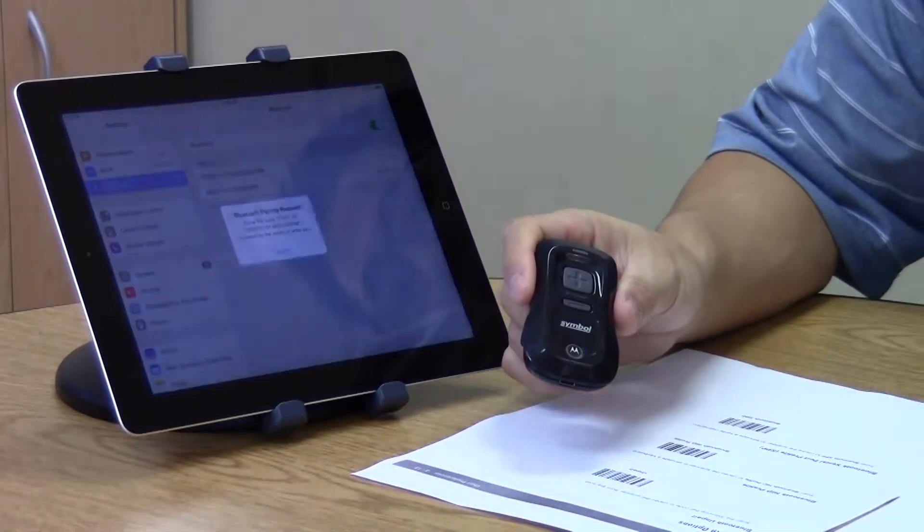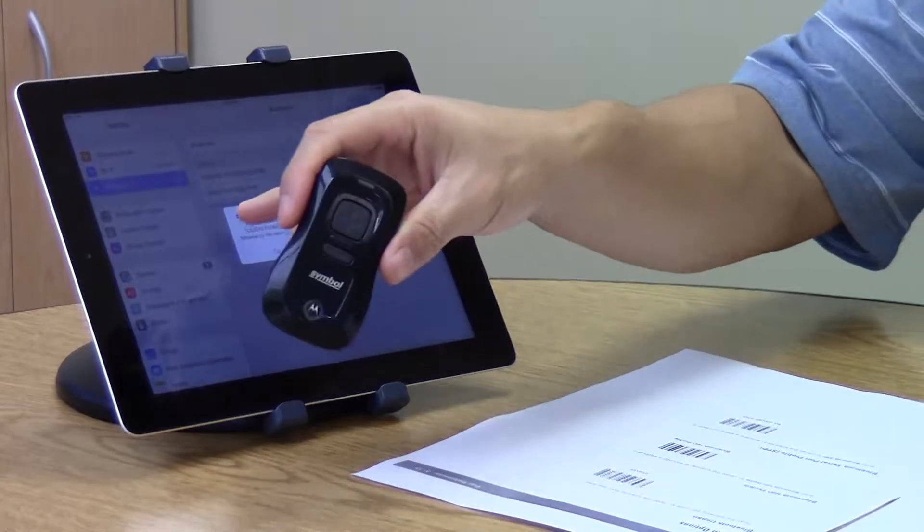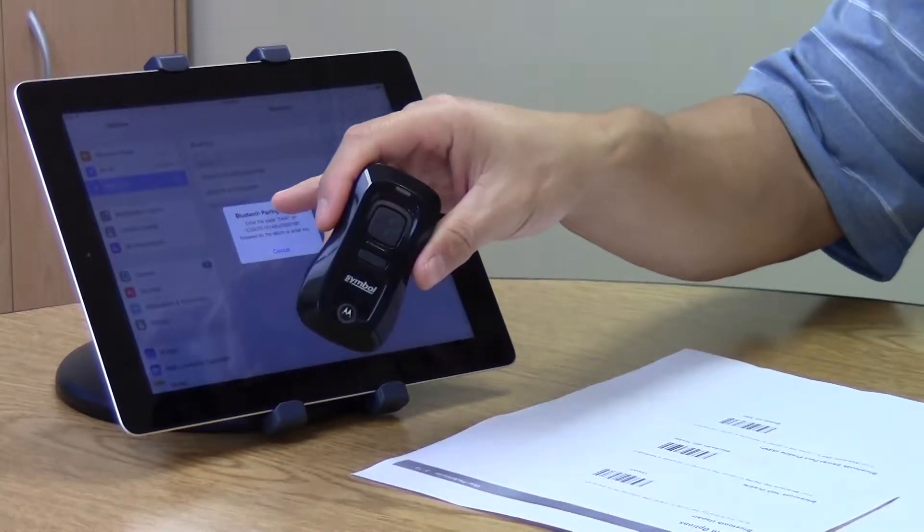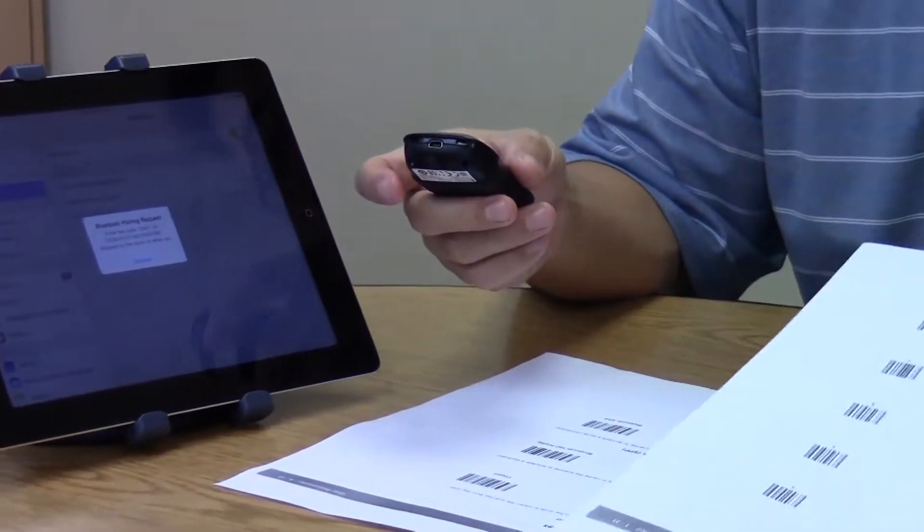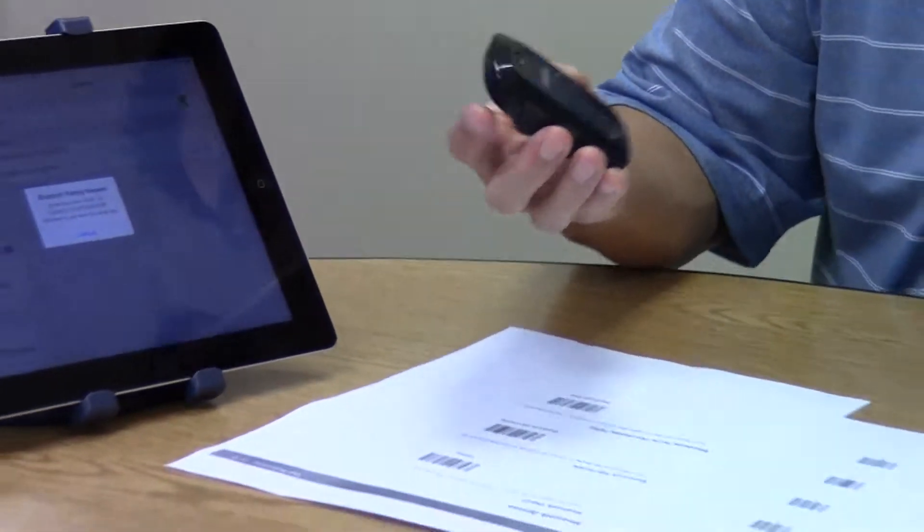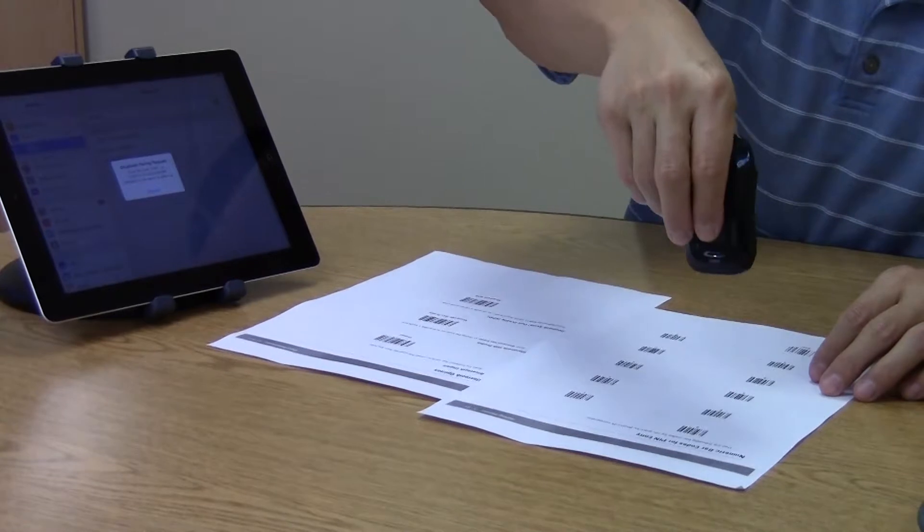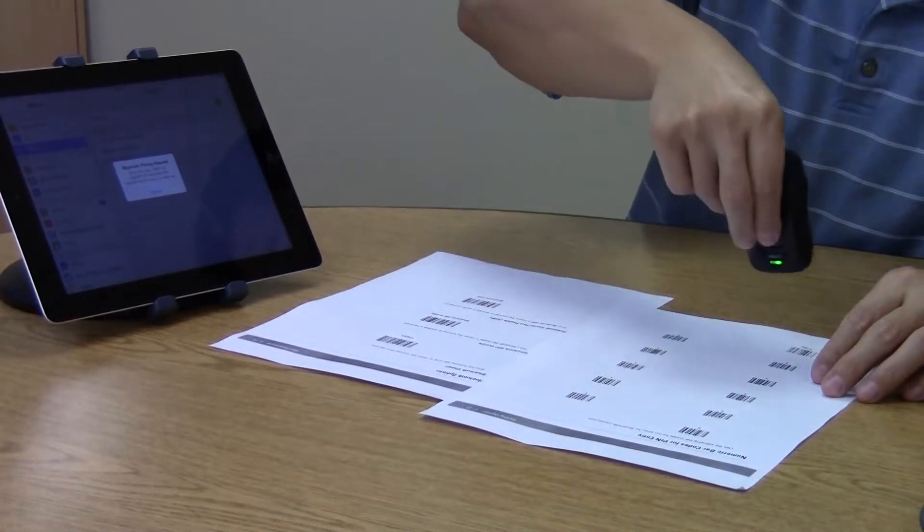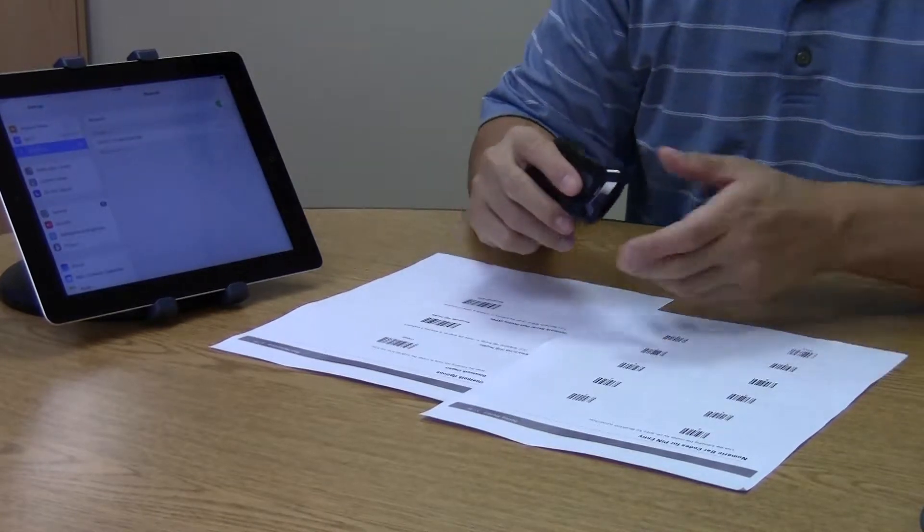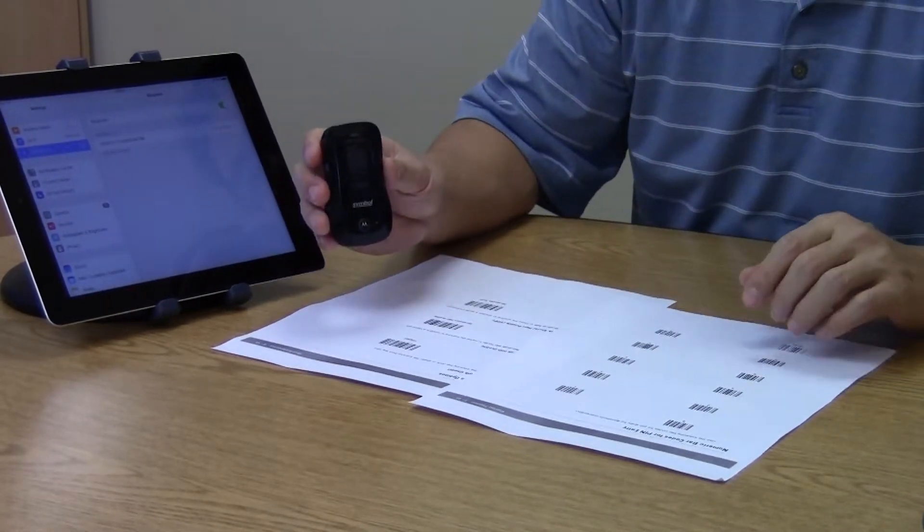They'll ask you for a pairing request and give you a code number. You have to then print out the numeric barcodes for PIN entry and scan the appropriate numbers. Once that's done, it is paired up.